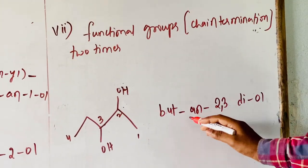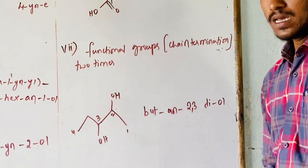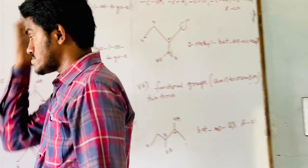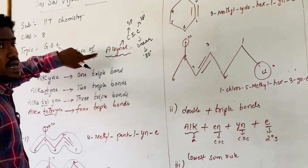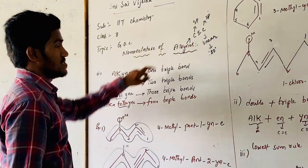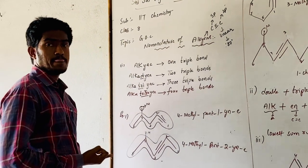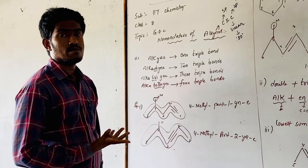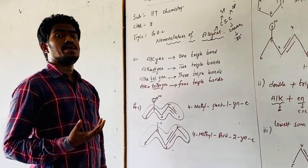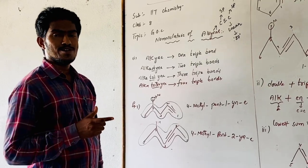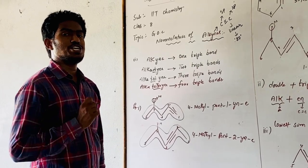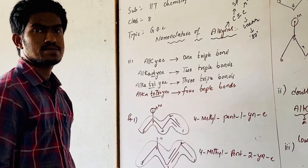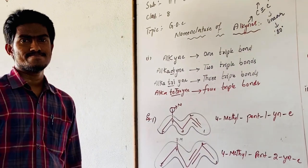In this session we have discussed the nomenclature of alkynes with respect to functional group, substituent, double bond numbering of carbon, and numbering of carbon atoms based upon the lowest number and lowest sum rule, chain termination, with some examples of bond line formulas. Thanks for watching.